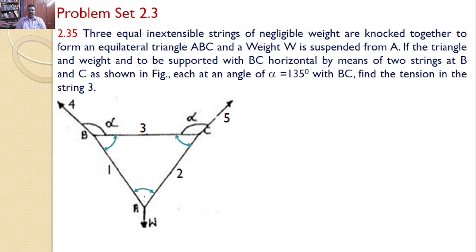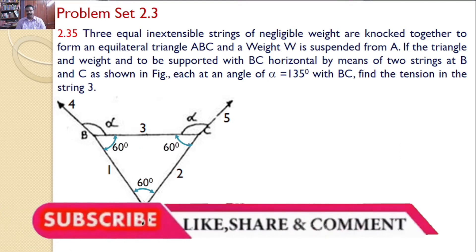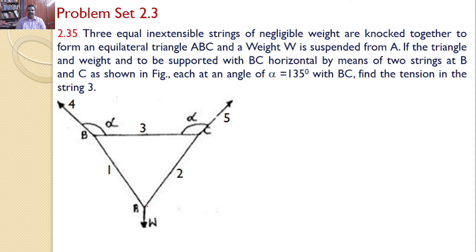At A, strings 1, 2, and 3 form an equilateral triangle, meaning each angle may be considered as 60 degrees. Let us analyze point by point. First, let us take point A. At A, weight W is acting downwards and two strings 1 and 2 are tied at A. The weight W is acting downwards.